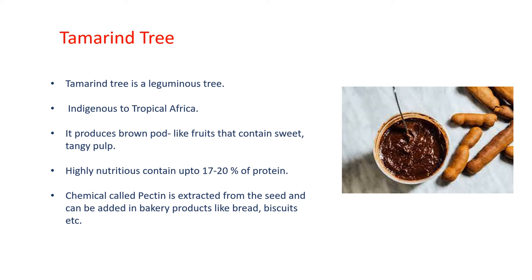Tamarind seed is highly nutritious and contains up to 17 to 20% protein. Also, a chemical called pectin is extracted from the seed and it can be added in bakery products like bread, biscuits, jam, and jelly.